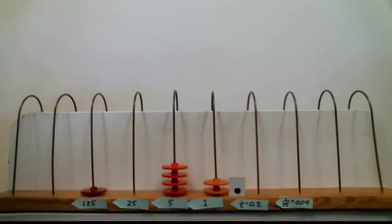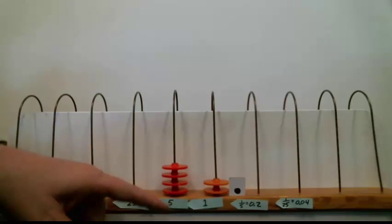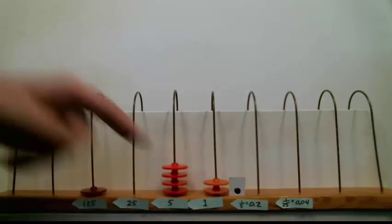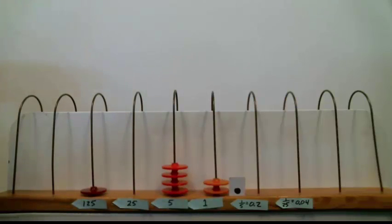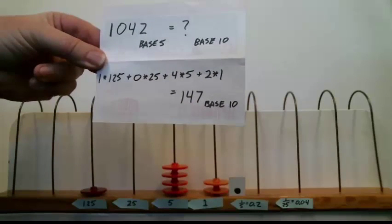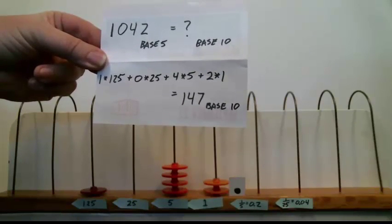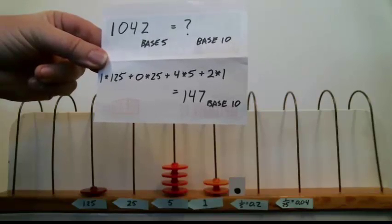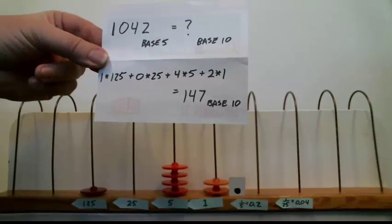What does that turn into in base 10? Well, take 1 set of 125. You take 4 sets of 5 and you take 2 sets of 1. And the number I got was 147 in base 10. Here's the calculation I used for that. So, 1, 0, 4, 2 base 5 is 147 in base 10.